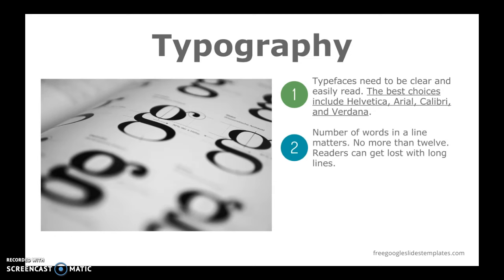The next one, and I think this is one that a lot of people don't think about, is your line length. You'll notice on the right-hand side of the screen that I have very short lines. In fact, probably the average number of words is five per line. If you were to stream a line of text across the screen like a paragraph, it would be very distracting, and sometimes you can get lost going from one end to the other of the computer.